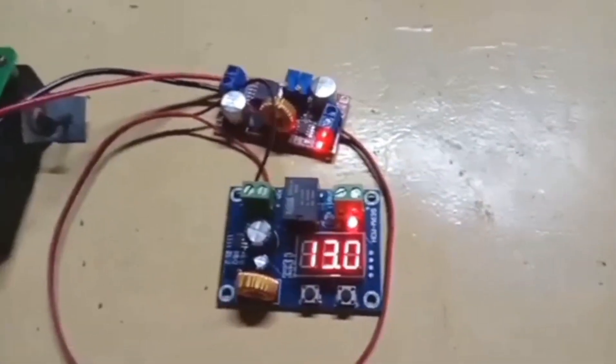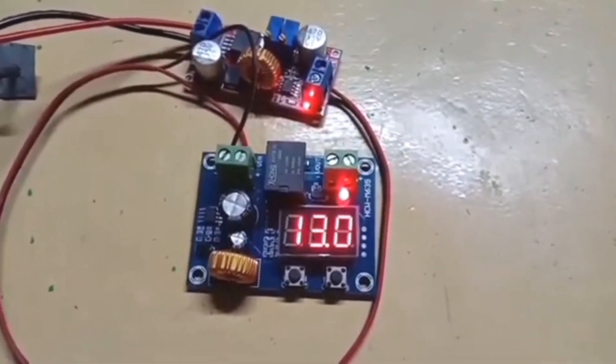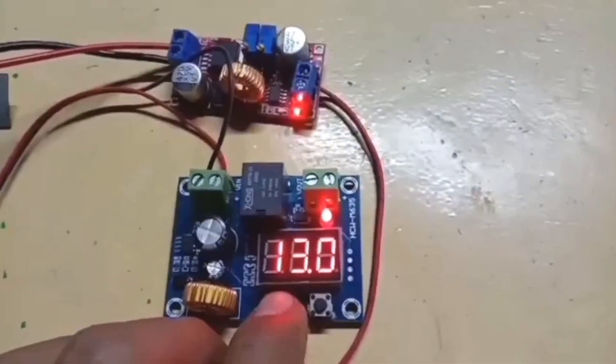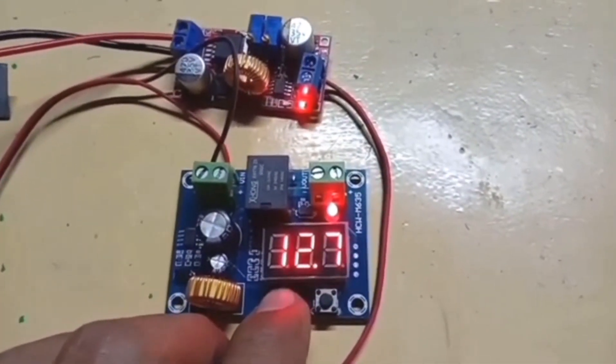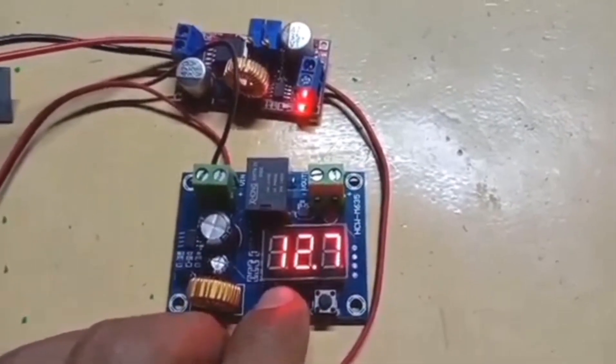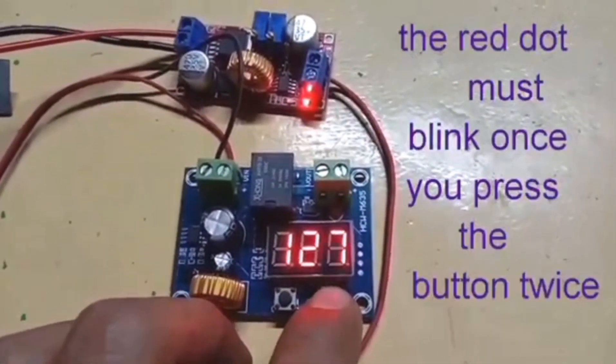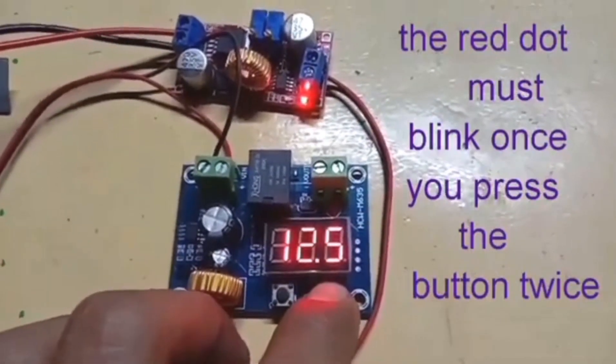Now I'm going to show you how to change the setting. First press the left button once, it will show you the low voltage. Then press the button twice. Now you can change the number you want. My example is 11.7.